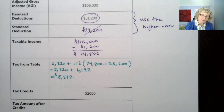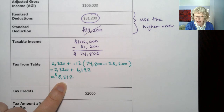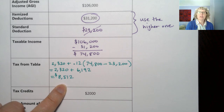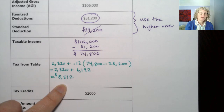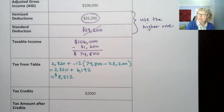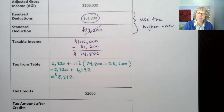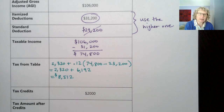This couple owes $8,512 in taxes, but that would be a really big bill at the end of the year. That's why from each paycheck we get taxes deducted — it's an estimate because they don't know exactly how much we'll owe in the end. That's why you have to file your taxes and do this adjustment, where you either get a refund or you might owe money.